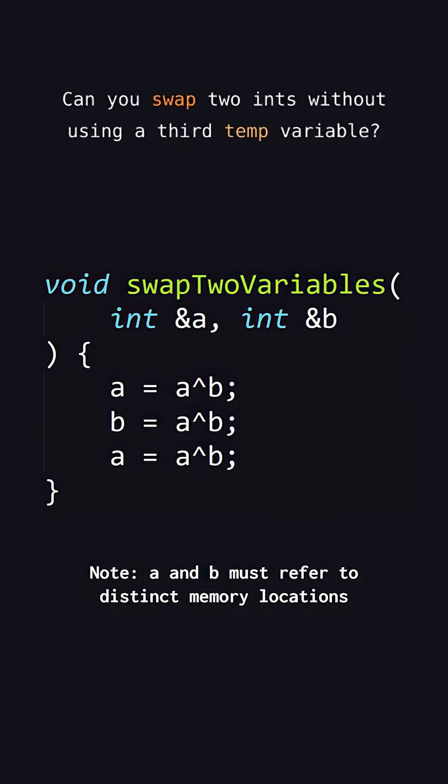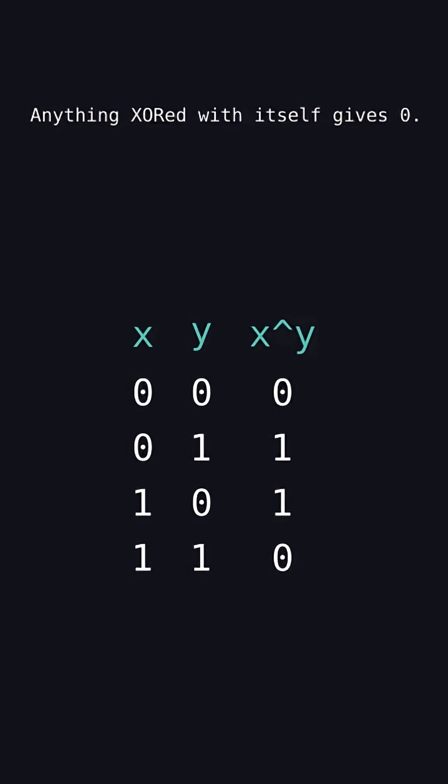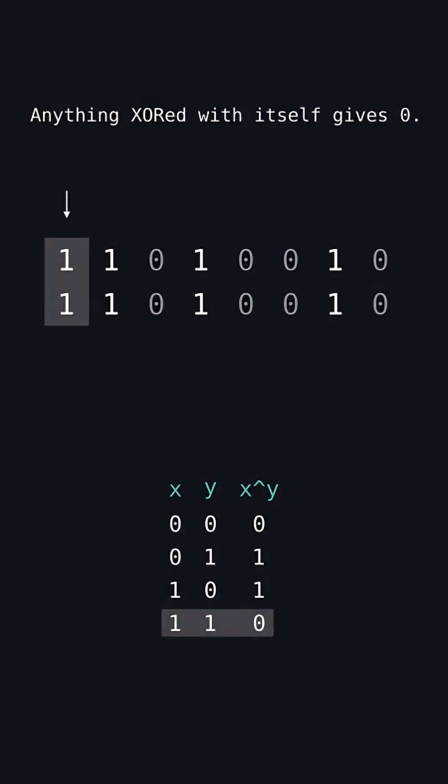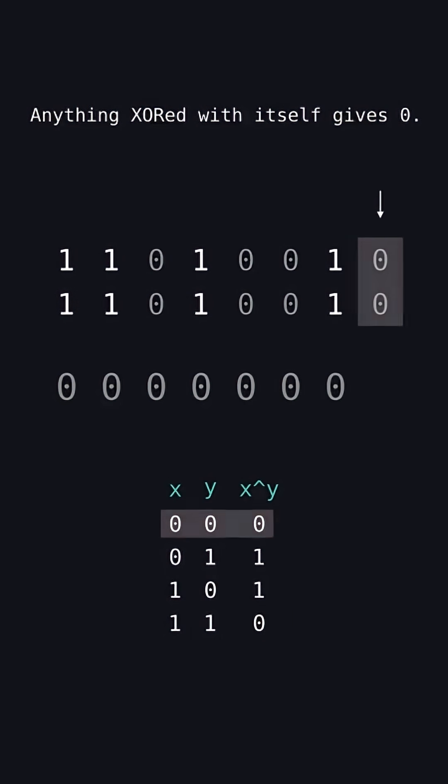Yes, with the bitwise XOR. How does it work? The first thing to learn is anything XORed with itself gives zero. This is because bitwise XOR outputs zero when the two input bits are the same and one when they are different. A variable XORed with itself will have the two input bits the same in every position, resulting in zero for all positions.